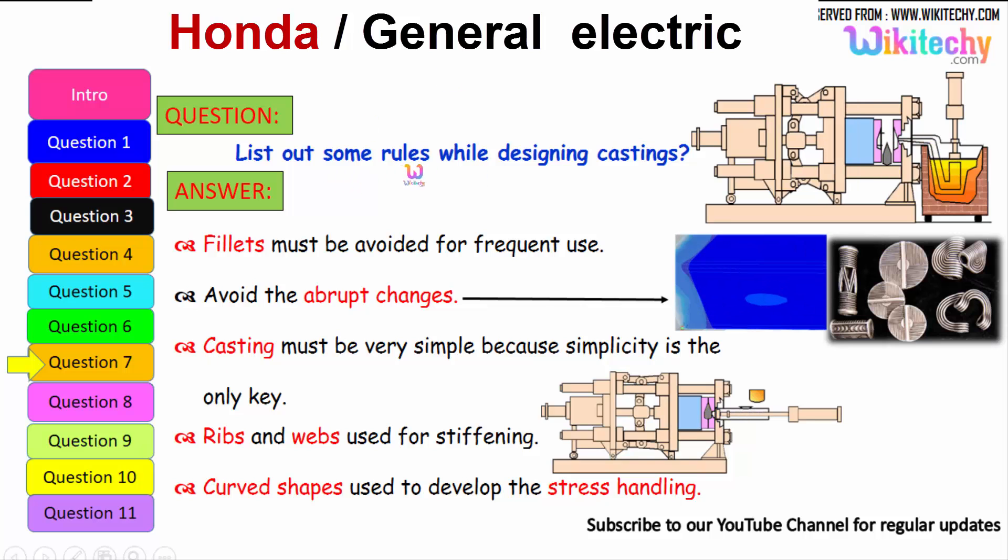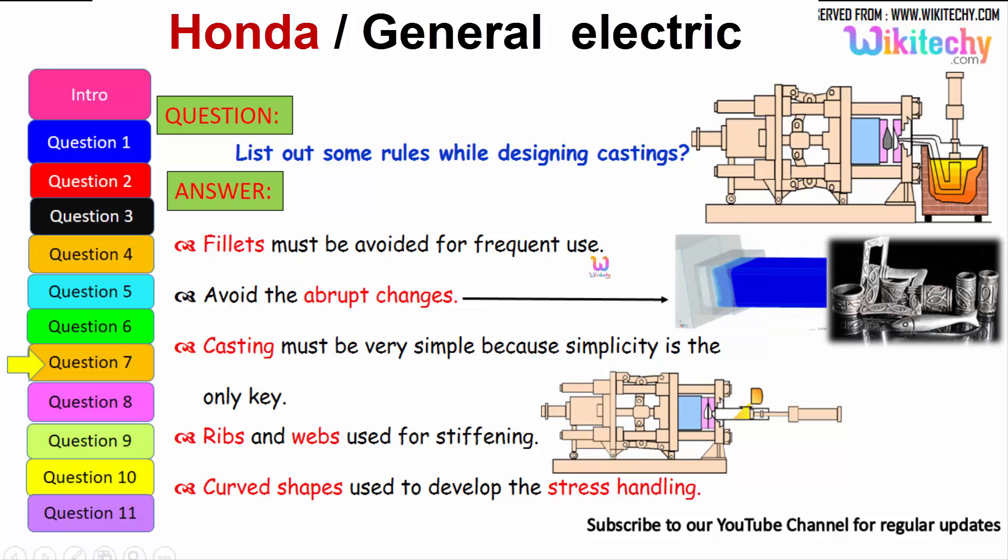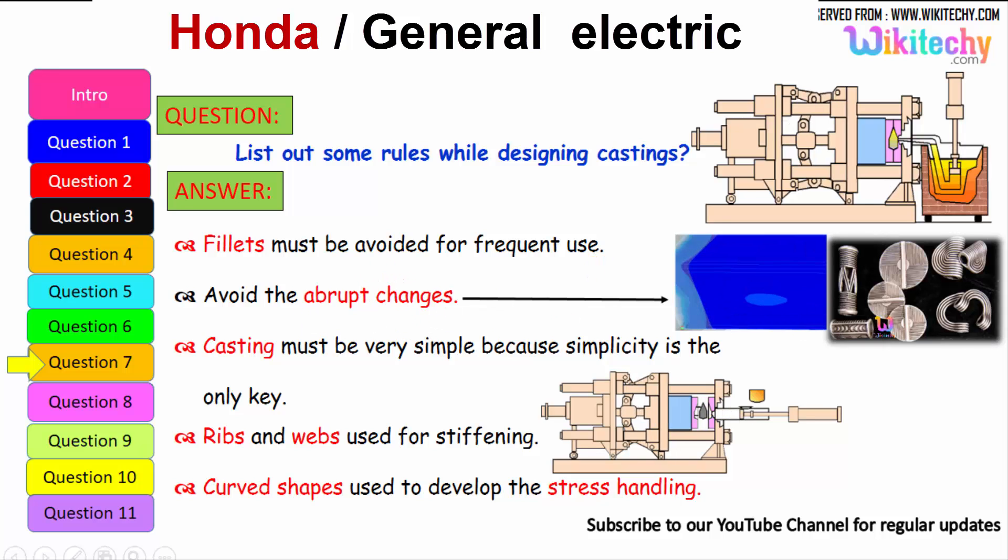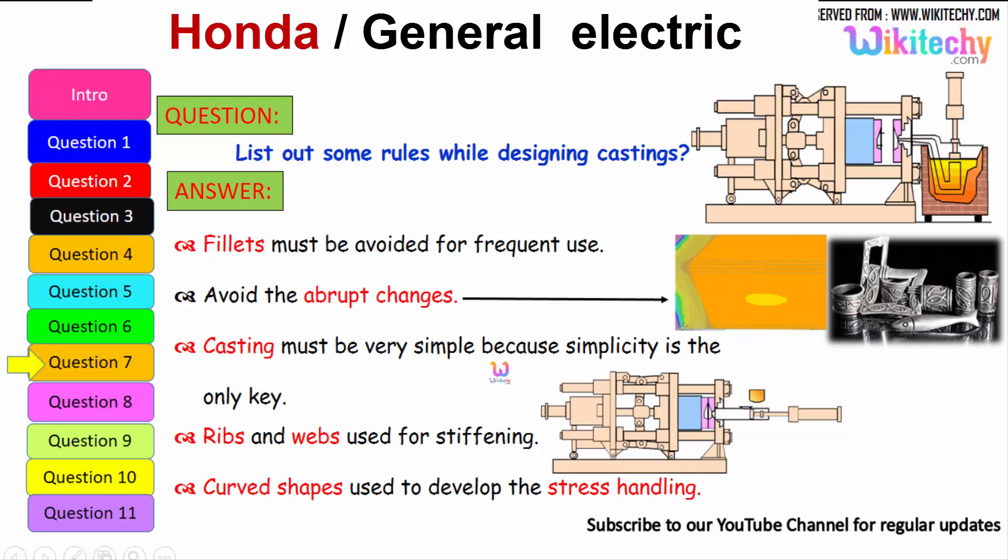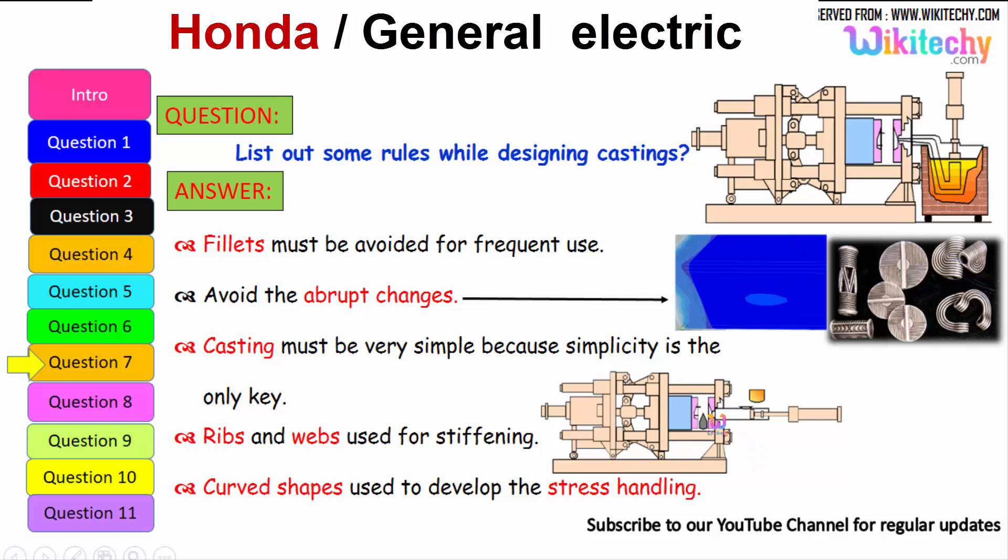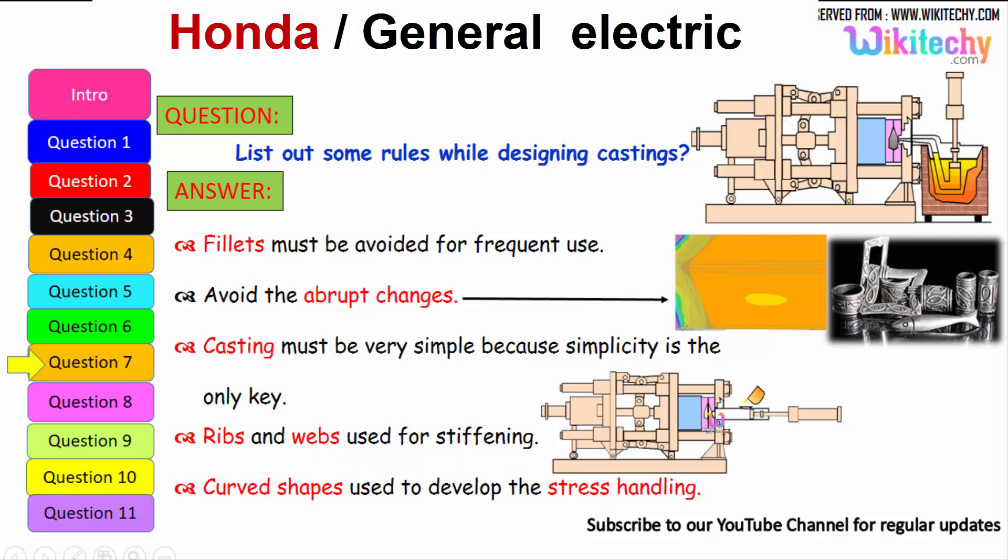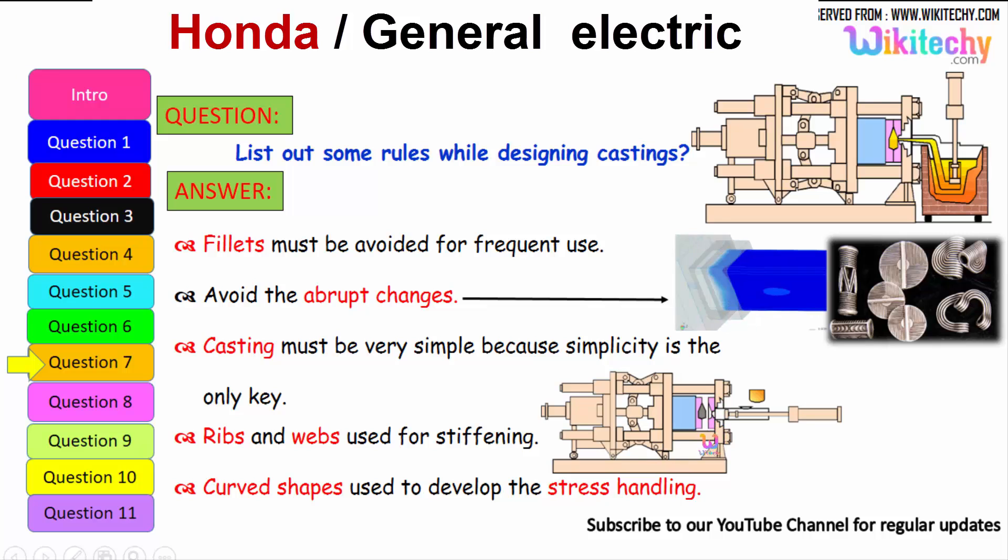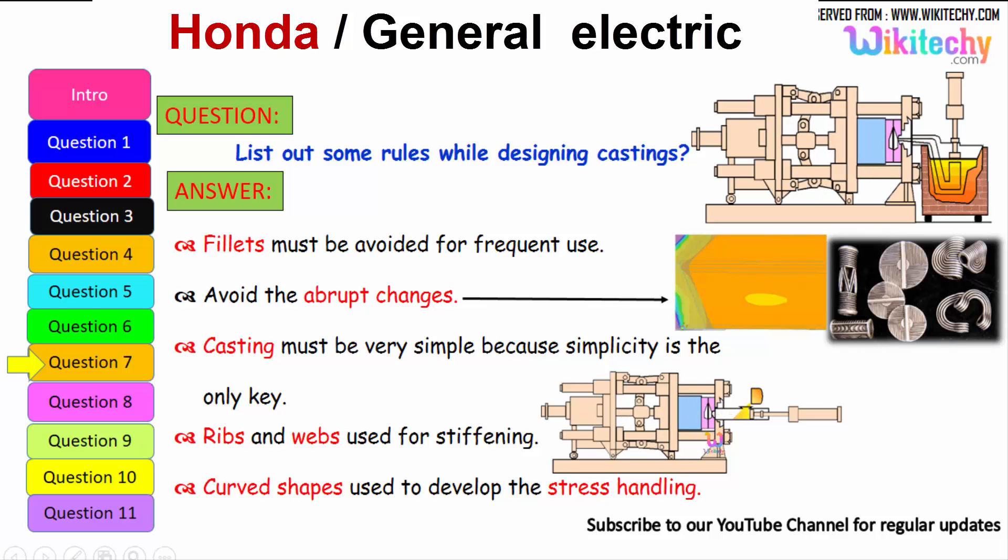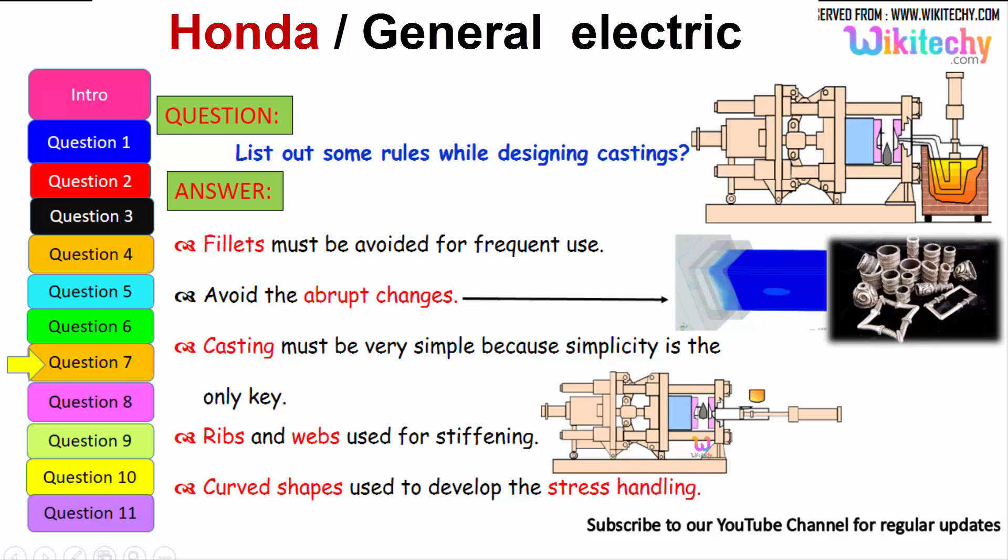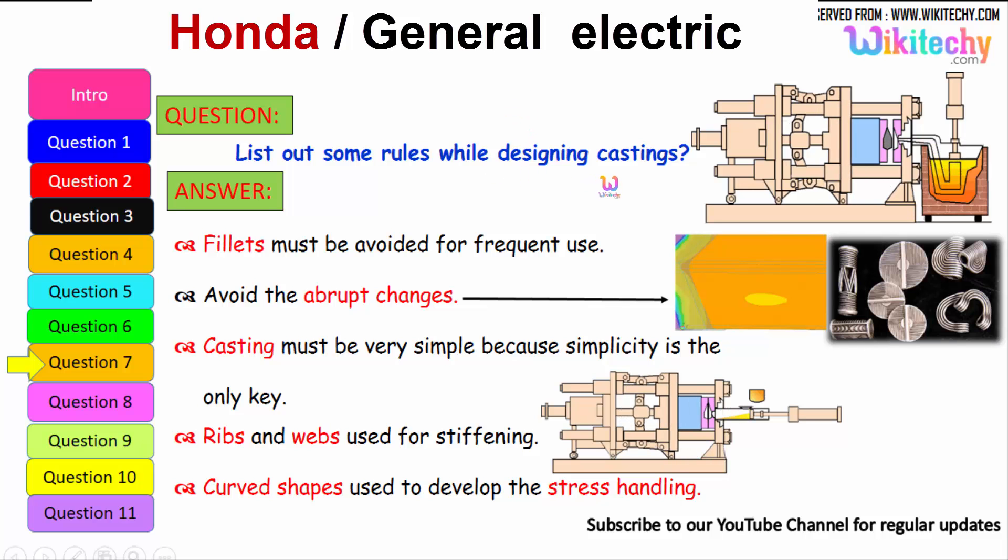Let us see some of the rules while designing castings. Fillets must be avoided for frequent use. Avoid the abrupt changes. Casting must be very simple because simplicity is the only key. Ribs and webs used for stiffening. You should have the ribs. The curved shape should be used to develop the stress handling. It should be a curved shape to avoid the stress handling. These are some of the rules which we have to follow for castings.